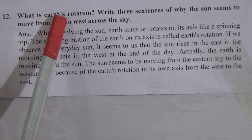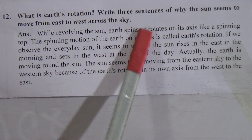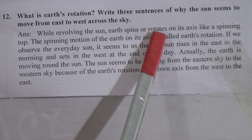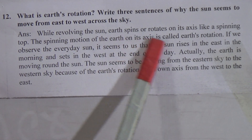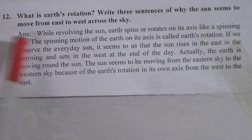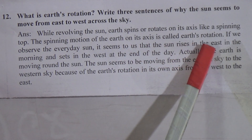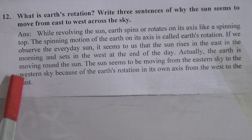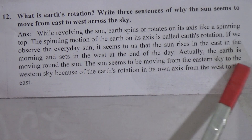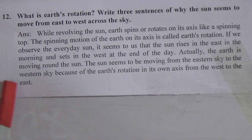Come to the last question of this chapter — question number 12: what is earth's rotation? Write three sentences on why the sun seems to move from east to west across the sky. The answer is: while revolving around the sun, the earth spins or rotates on its axis like a spinning top. The spinning motion of the earth on its axis is called earth's rotation. If we observe the sun every day, it seems that the sun rises in the east in the morning and sets in the west at the end of the day. Actually, the earth is moving around the sun. The sun seems to be moving from the eastern sky to the western sky because of the earth's rotation on its own axis from west to east.